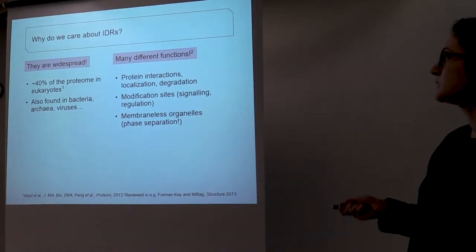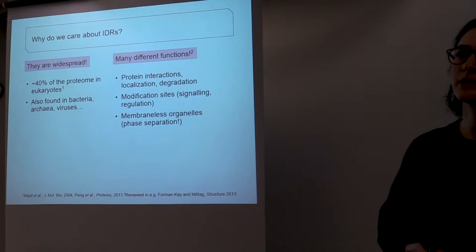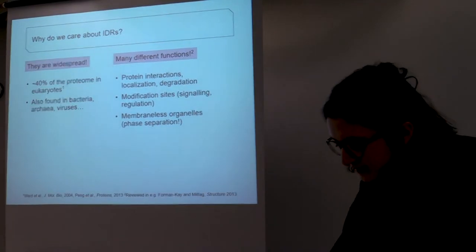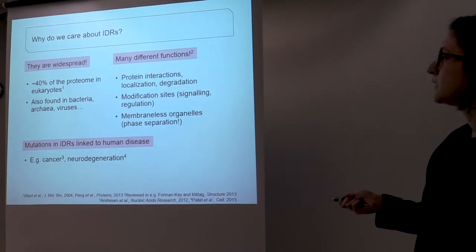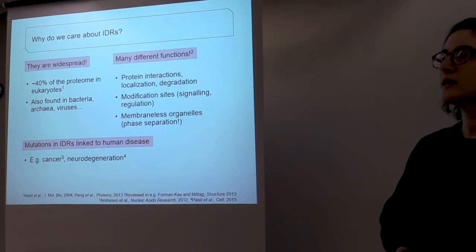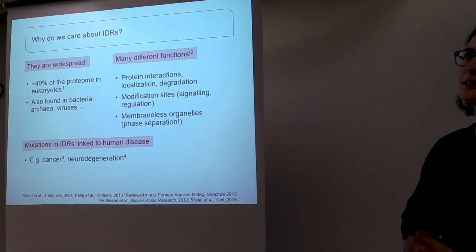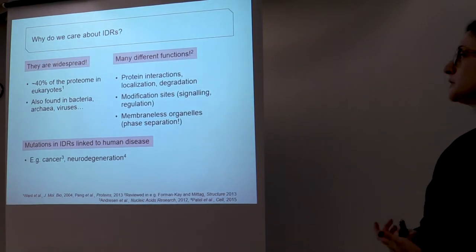They've also been associated with membraneless organelles, which are thought to form through phase separation, which is a very hot area right now. And also we know that mutations in IDRs are linked to human diseases such as cancer and neurodegeneration.